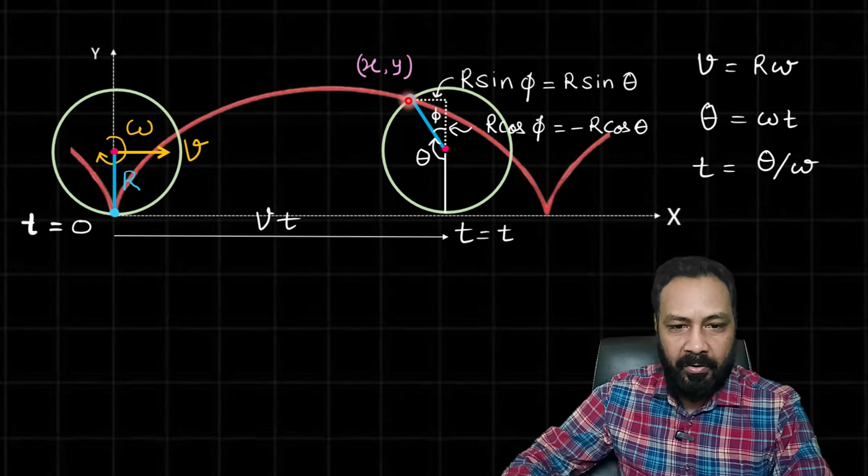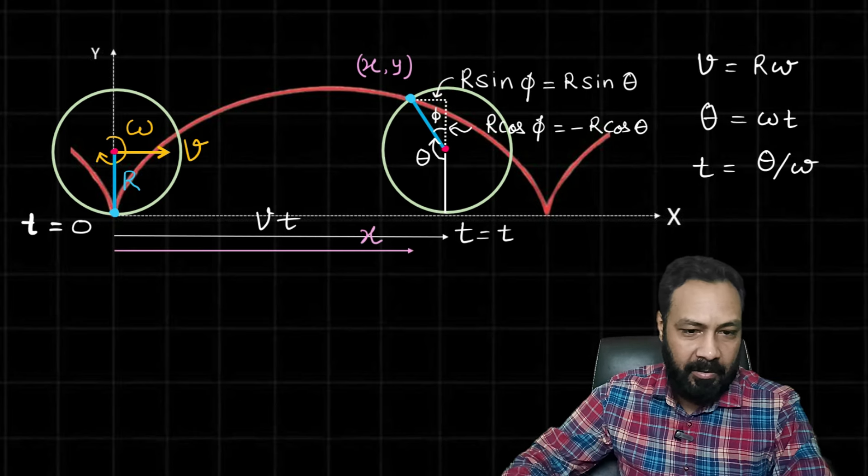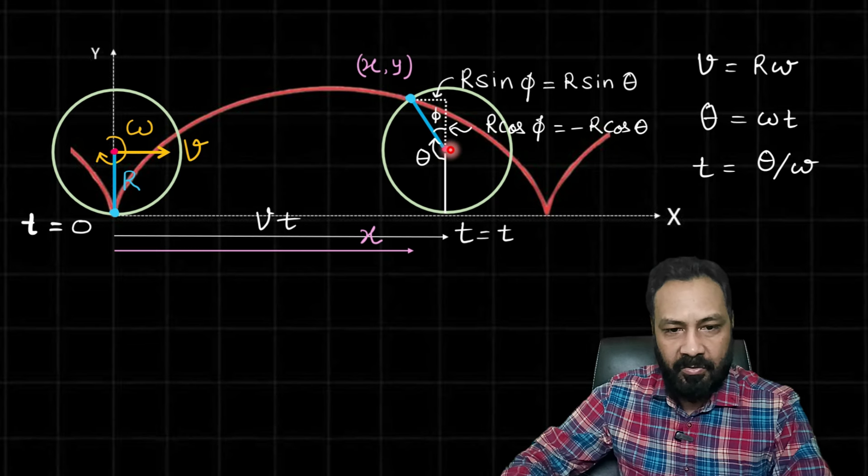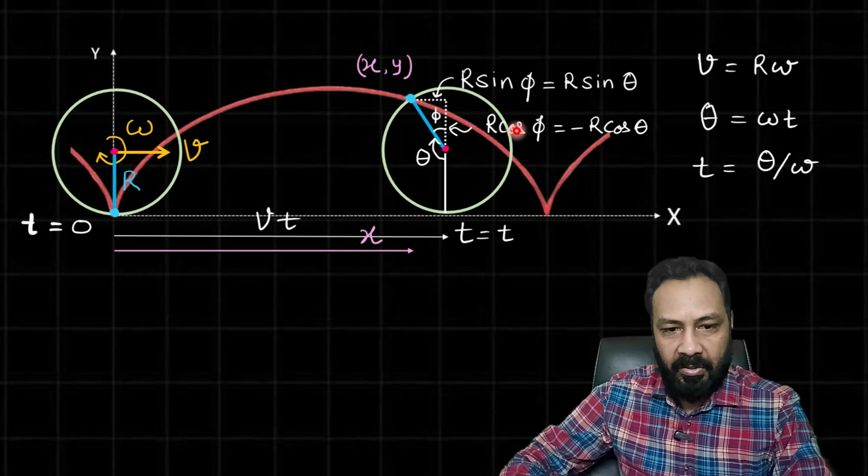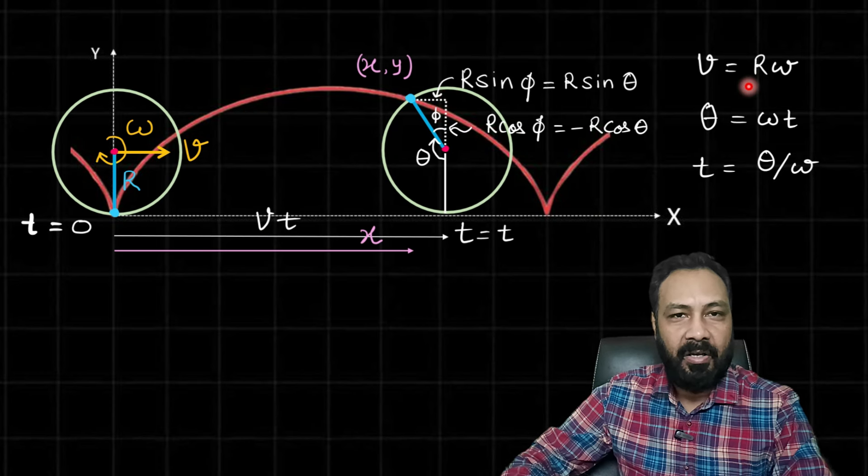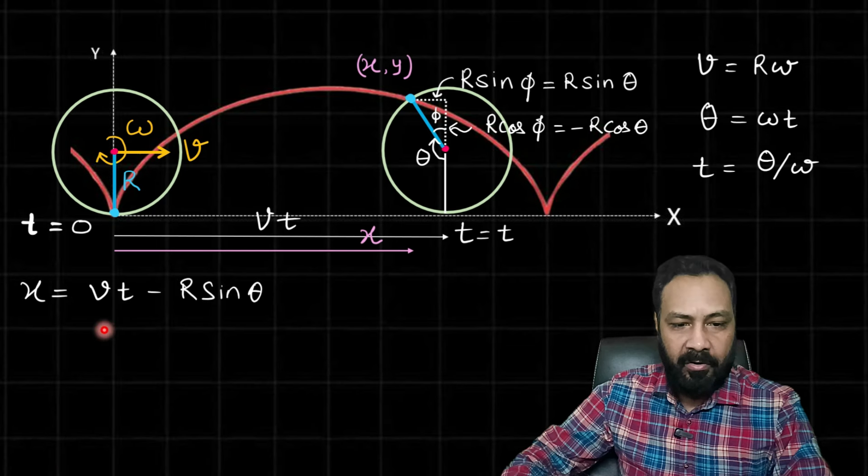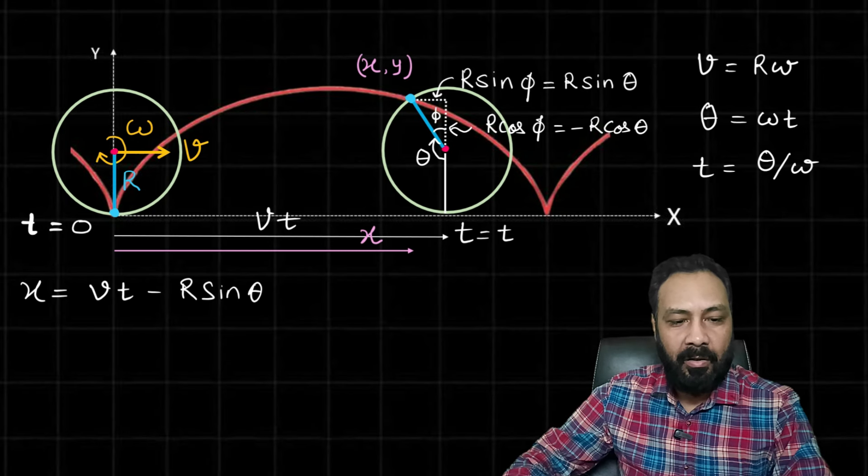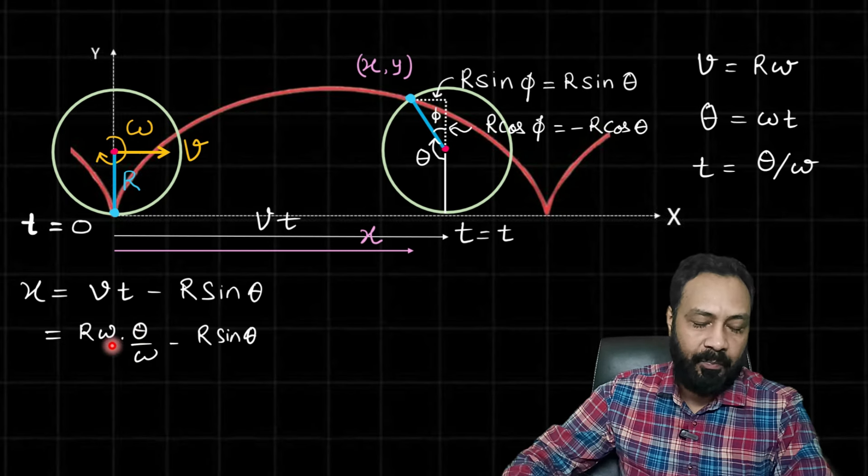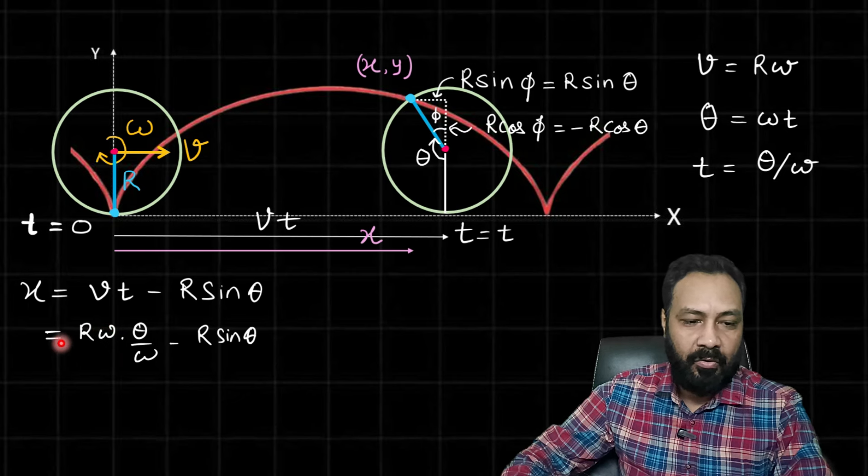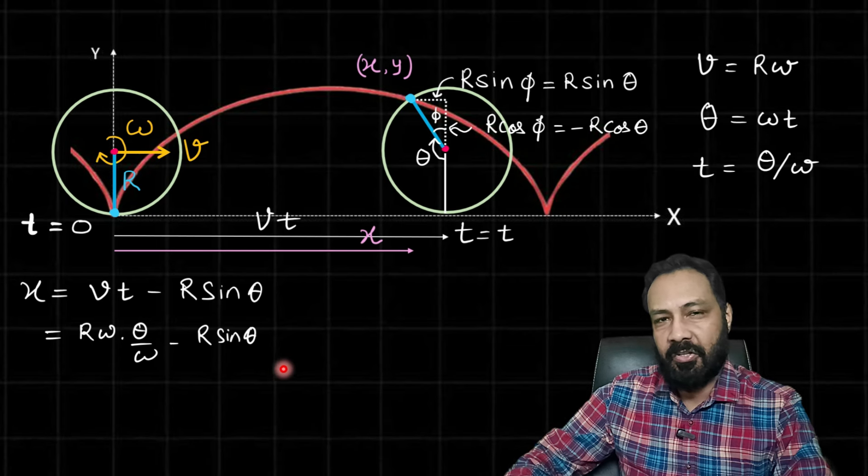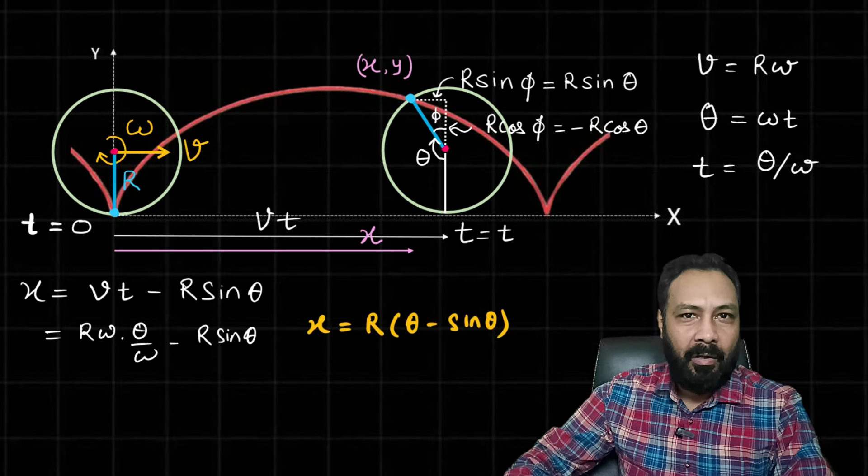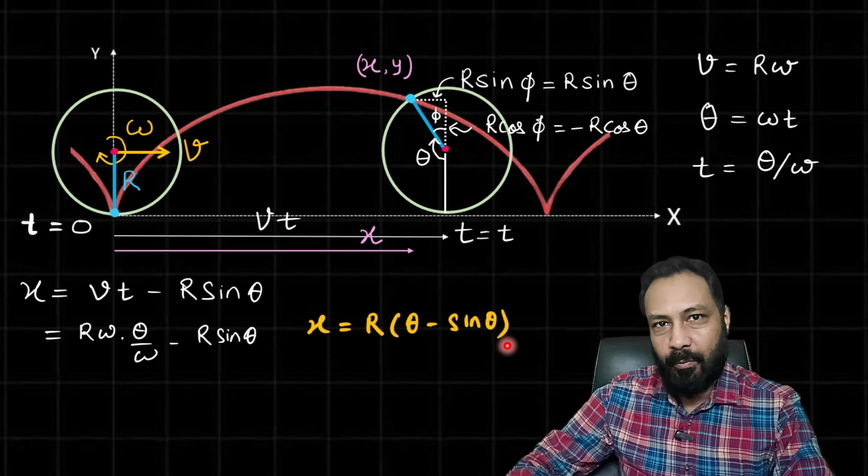So now this x coordinate at time t is this length. This x coordinate is from here to here to here—this is vt, and from this vt if I subtract this distance which is r*sin(theta), I will get the x coordinate. So x coordinate is vt - r*sin(theta). And v is r*omega and t is theta/omega. So omega omega will cancel, so x will become r*theta - r*sin(theta). Take r common, so x = r(theta - sin(theta))—that is the x coordinate in terms of parameter theta.